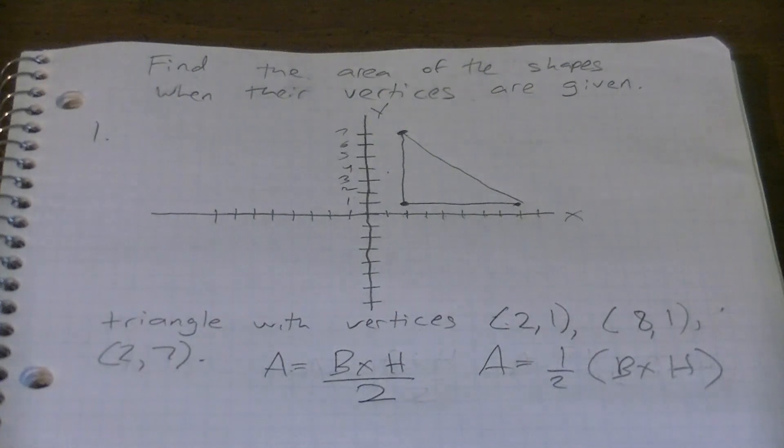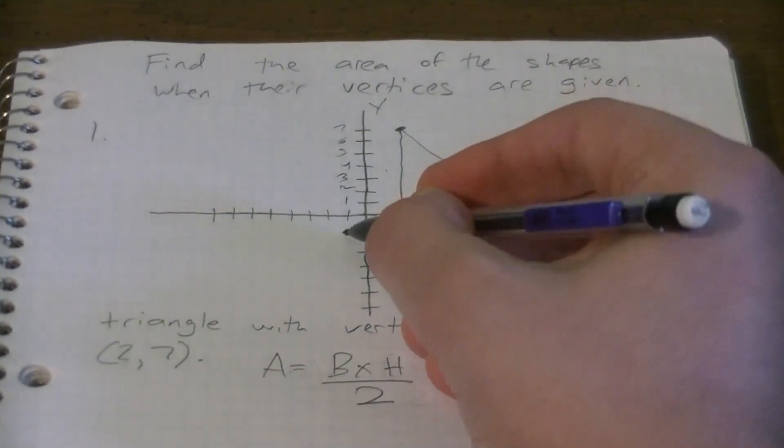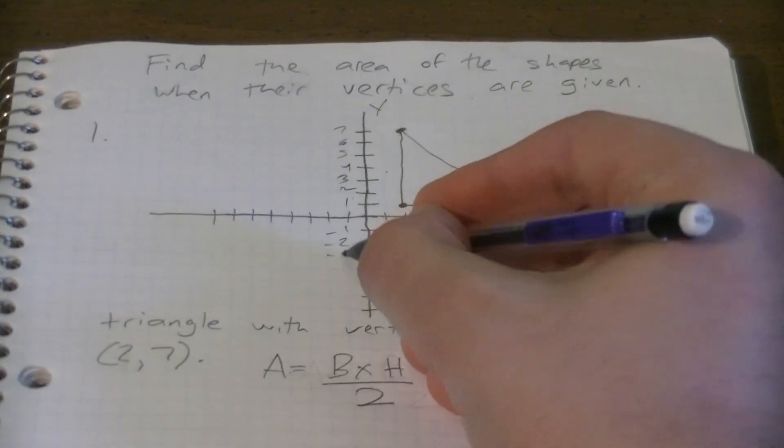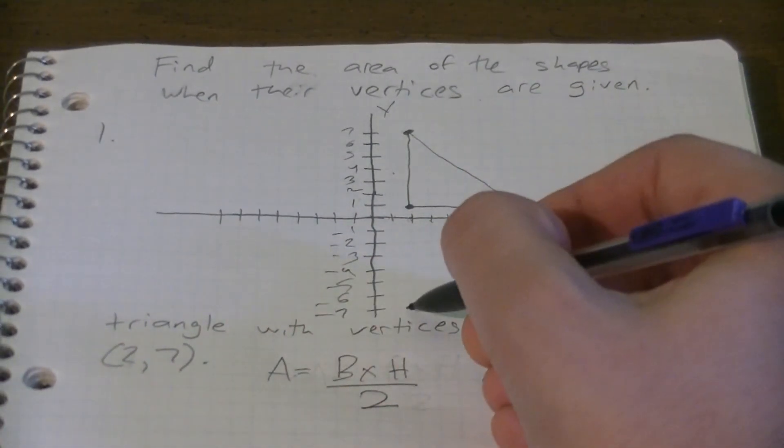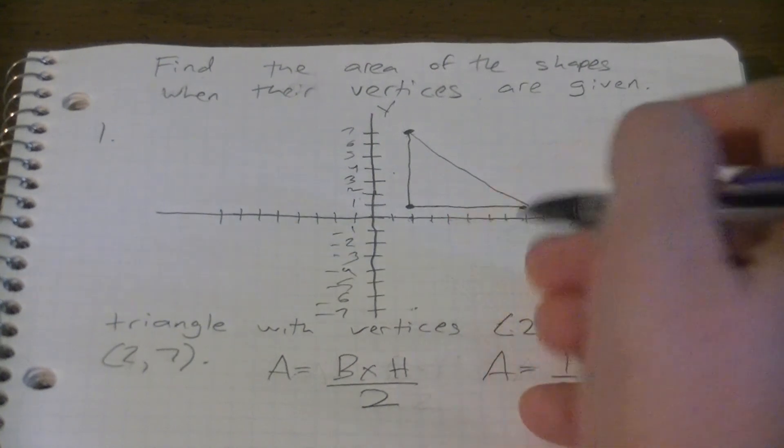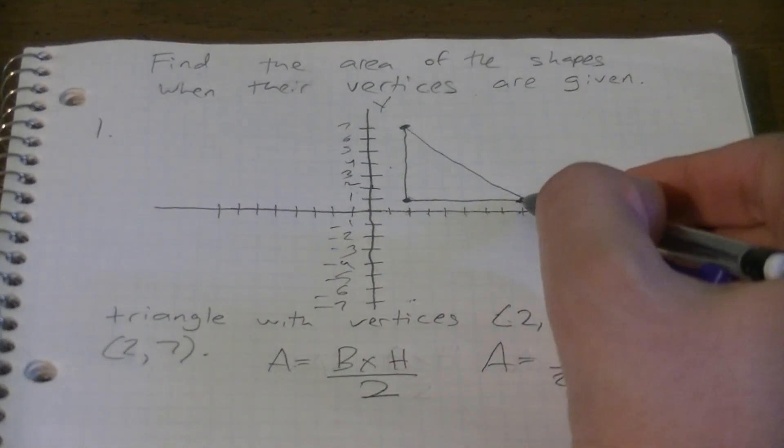Now if it had been (2,-7), we would have been negative one, negative two, negative three, negative four, negative five, negative six, and negative seven. The point would have been here. But we're not doing (2,-7), we're doing (2,7).